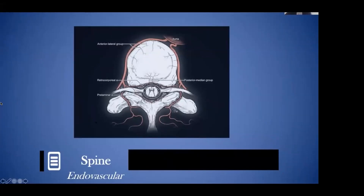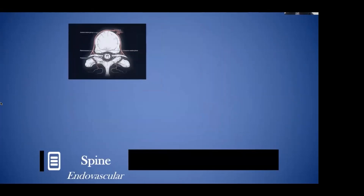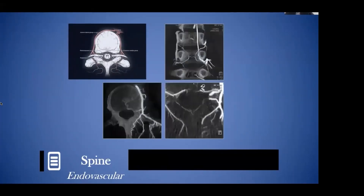Angiography uses fluoroscopy, a sort of X-ray movie — we place a catheter in individual vessels and inject and take pictures. During your neurosurgical training you will perform angiography; we train the neurosurgical residents at our practice. It's becoming more and more an integral part of neurosurgical practice, particularly if you plan to do any sort of vascular work.